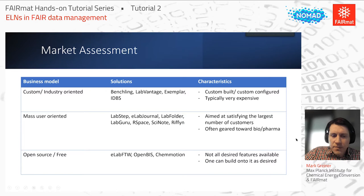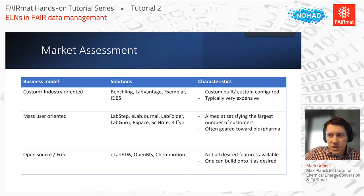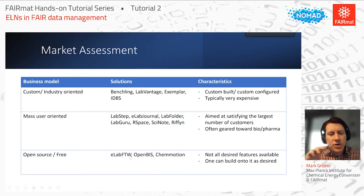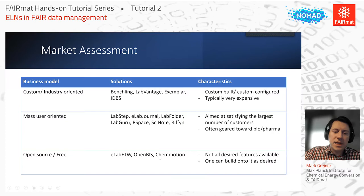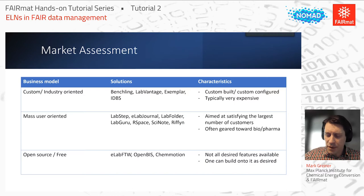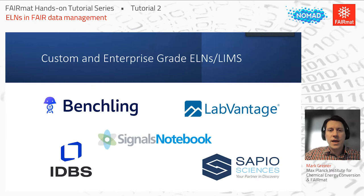The last grouping is open source or free. I want to distinguish between open source and free — they are not the same thing. Open source does not necessarily mean free; it can be open source and still require license fees. Some open source ones have a hybrid model where you have the option to pay for additional services or features. Examples include Elab FTW, OpenBIS, and ChemMotion. You may not have all the desired features, but in principle you could develop them yourself if you have the in-house expertise.